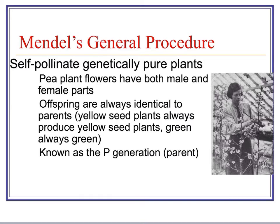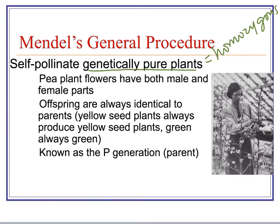Generally speaking, what Mendel did working with his pea plants is he first self-pollinated genetically pure plants. These genetically pure plants were homozygous, so they always produced offspring that were identical to themselves. Yellow seed plants always produced plants with yellow seeds, generation after generation. He called these the P generation, the parent generation.